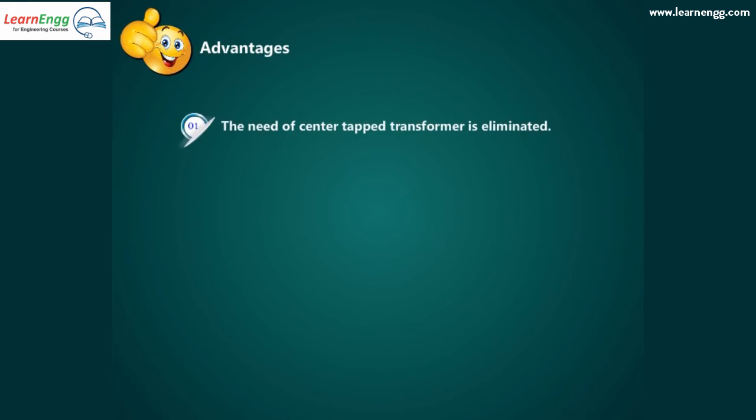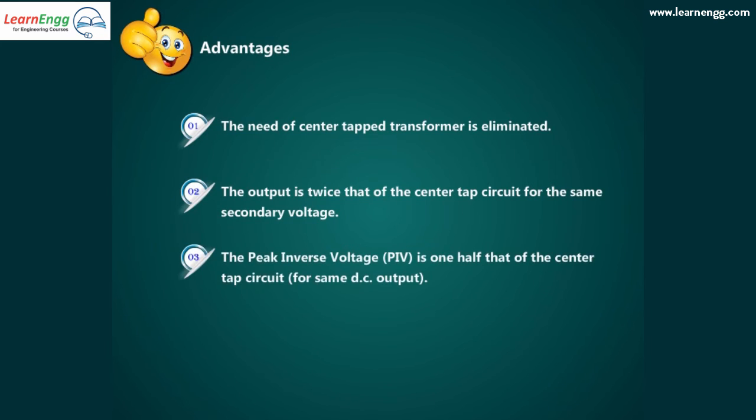Advantages. The need of center tapped transformer is eliminated. The output is twice that of the center tapped circuit for the same secondary voltage. The peak inverse voltage, that is PIV, is one half that of the center tapped circuit for the same DC output.